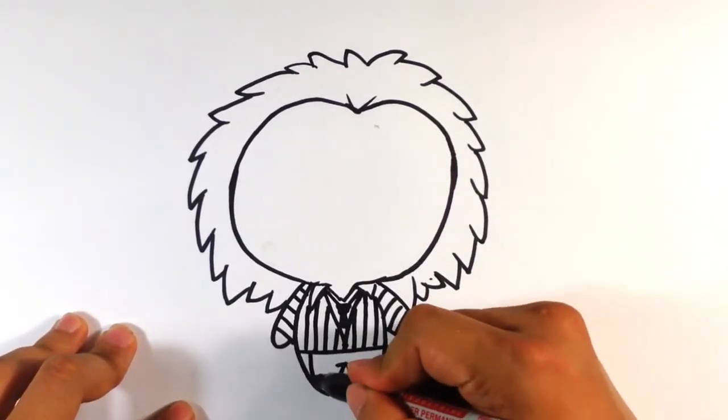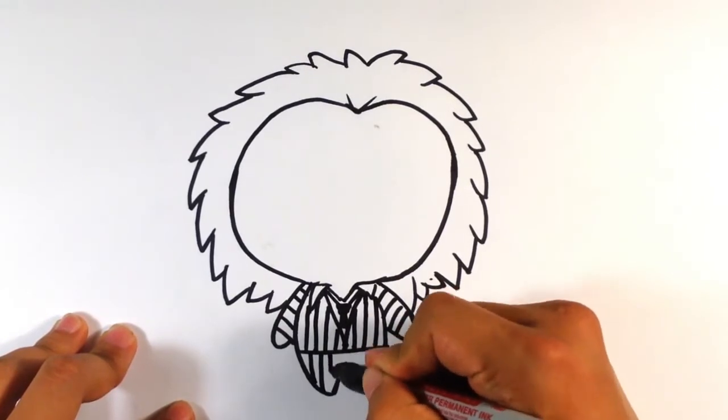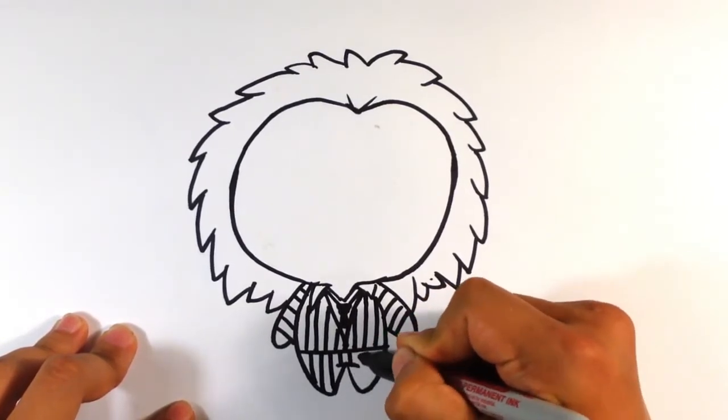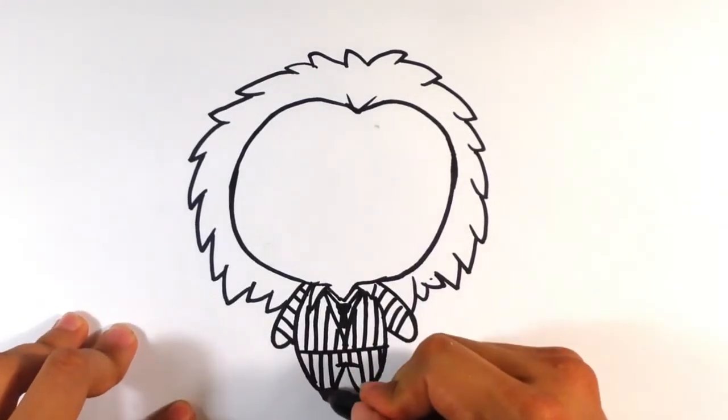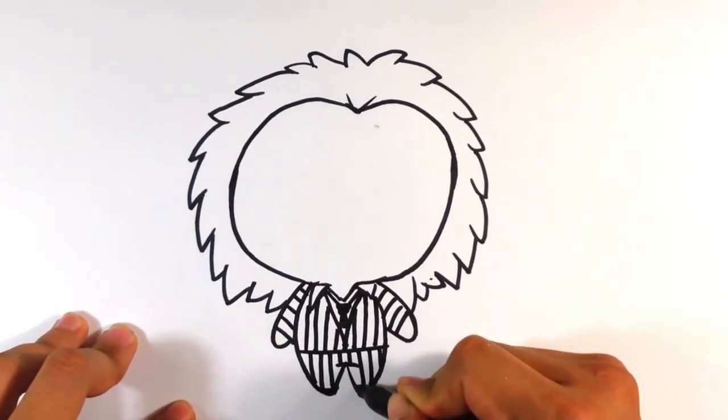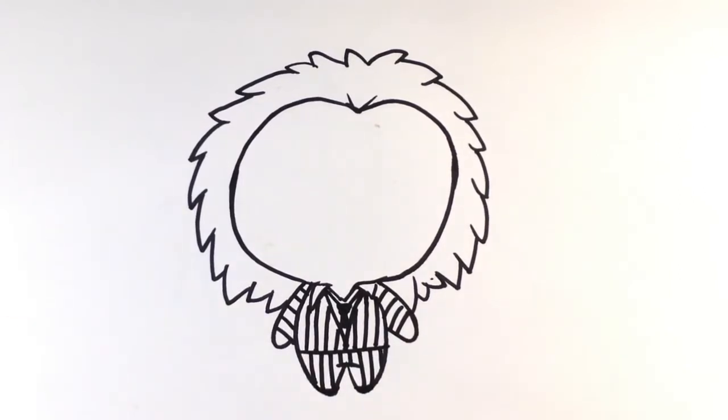And then his suit has stripes going vertically, and then same thing goes for the pants. I'm going to try to make them not line up with the upper part so it doesn't look like it's totally across. And I believe he has black shoes on. I'm just going to throw a little bit of an extra layer toward the bottom to kind of indicate the shoes.